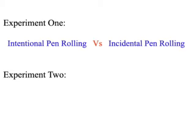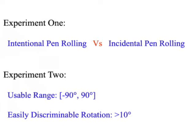Prior to incorporating pen rolling into pen-based interactions, we conducted two experiments to investigate the properties of rolling a pen. Experiment 1 determined the thresholds that separate intentional pen rolling for the purpose of interaction from incidental pen rolling caused by regular writing and drawing. Experiment 2 determined the usable range within which a user can comfortably roll a pen, and the easily discriminable rotation that a user can intentionally roll a pen in a timely and accurate fashion.